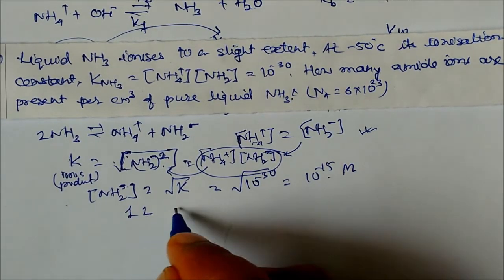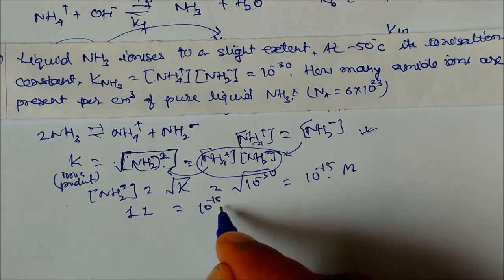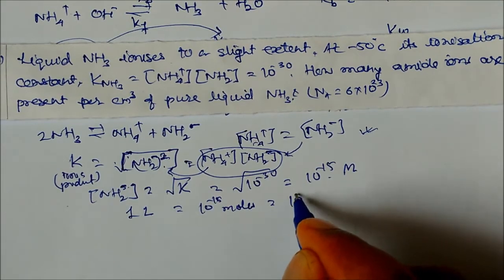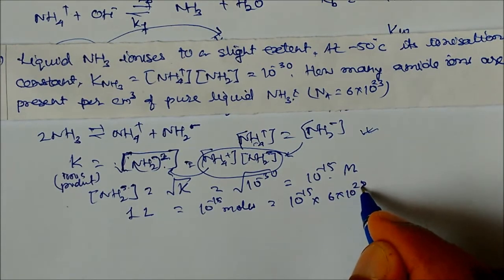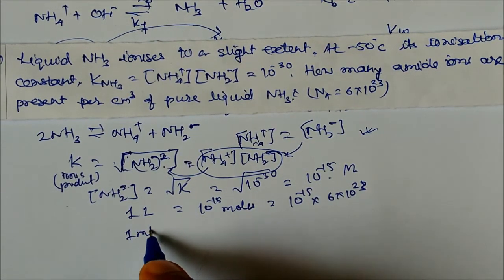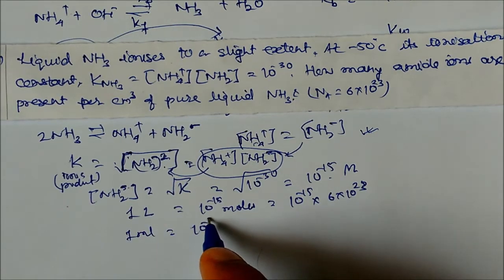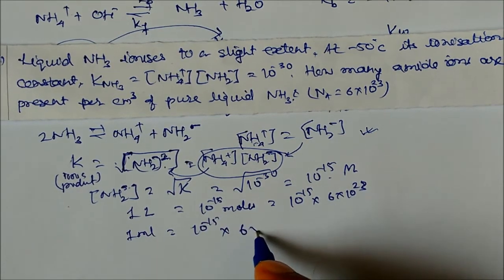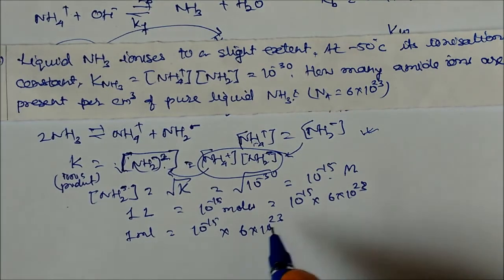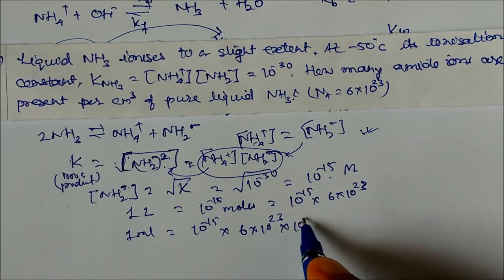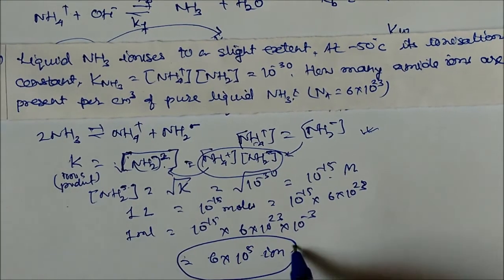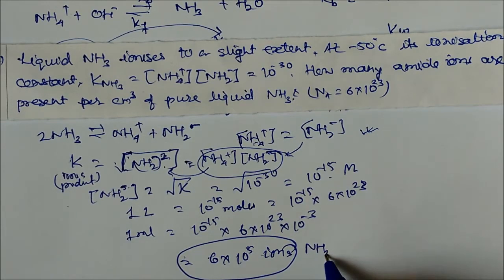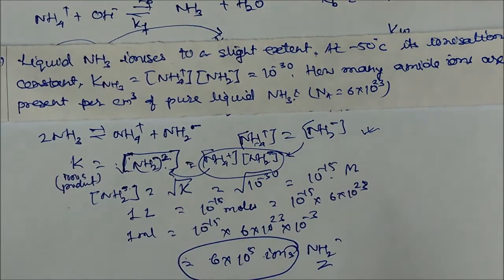Converting to number of molecules: 10⁻¹⁵ mol × 6×10²³ (Avogadro's number) = 6×10⁸ molecules per liter. For 1 mL, divide by 1000: 6×10⁵ ions per mL. And per cm³ (which equals 1 mL), we get approximately 10⁵ amide ions present in the solution.